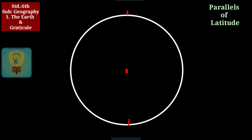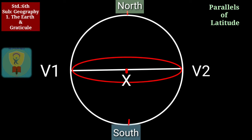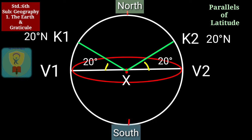In this figure, a circle is given. The circle is divided equally with the plane of the equator — that is V1 V2 — and X as the center of the circle. First, draw a line from the point on the surface of the earth — that is K1 — that forms 20 degrees at the center of the earth. Draw the same line from the other side of the circle — that is V2-X-K2. Now K1 and K2 are the points on the circle.